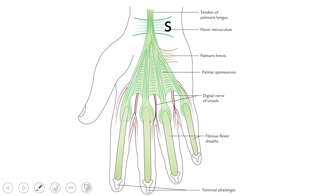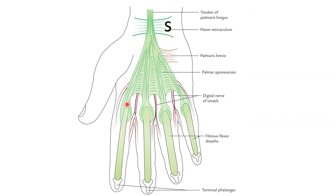When we reflect the palmar aponeurosis, there are many vessels and nerves underneath it. In this diagrammatic view, the central thick part has its proximal attachment over the flexor retinaculum, becoming continuous with the tendon of palmaris longus. Distally, the palmar aponeurosis divides into four digital slips, each dividing into superficial and deep parts and merging with the fibrous flexor sheath of the corresponding digit.